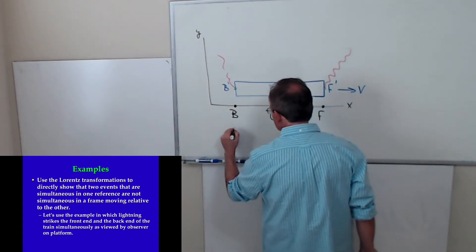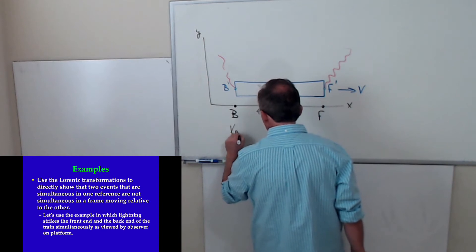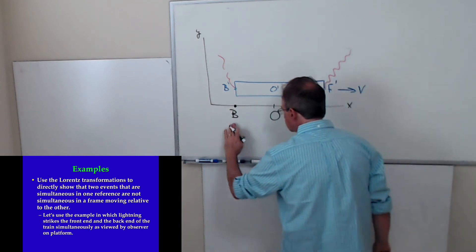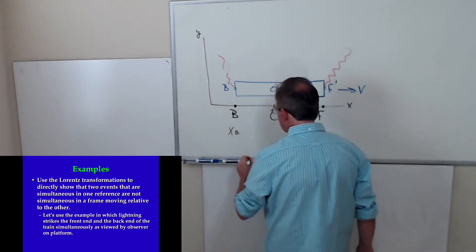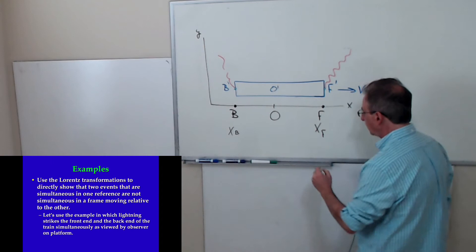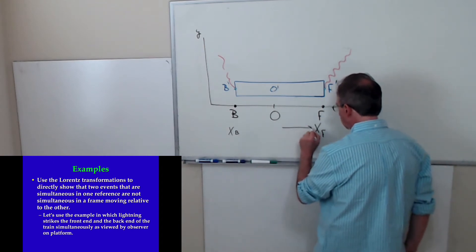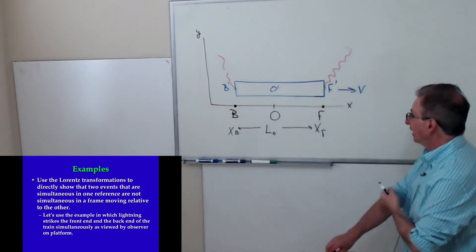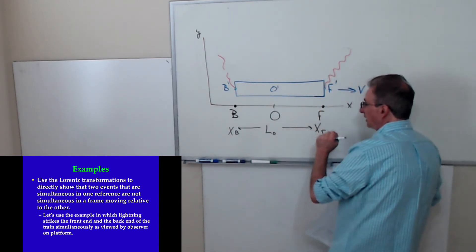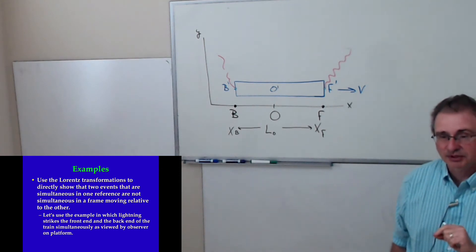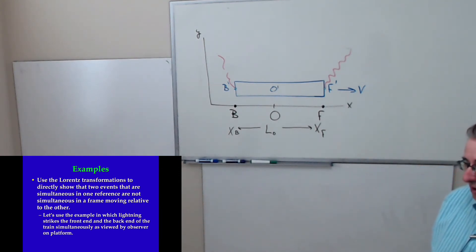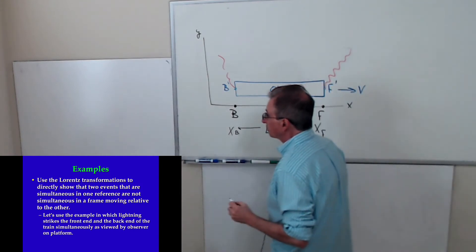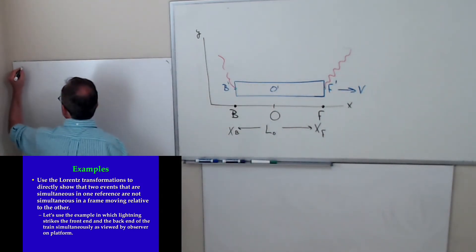I'm going to call the back position X sub B and the front position X sub F. The difference in those two positions is the proper distance between B and F — it's the proper distance between the scorch marks. The Lorentz time transformations look like this.